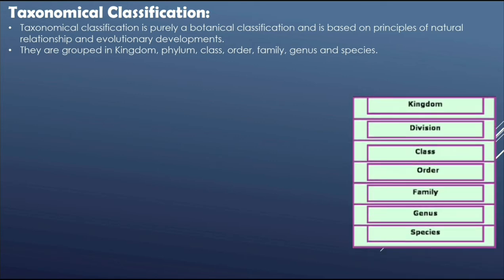As you can see, the first one is kingdom, then division, then class, then order, then family, then genus, and then species. So they are grouped in hierarchical form from kingdom to species.